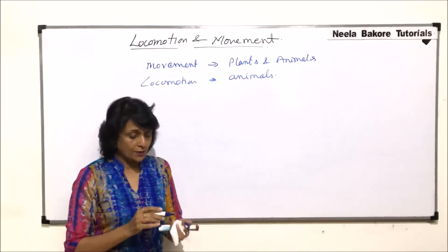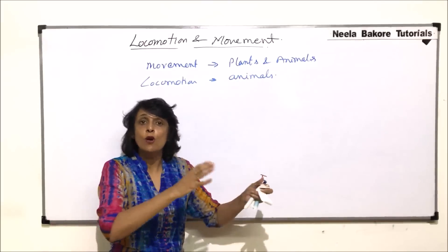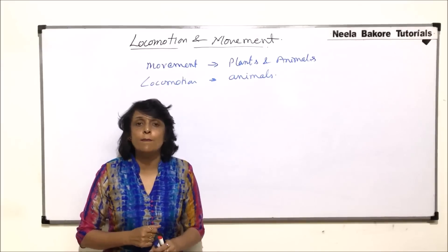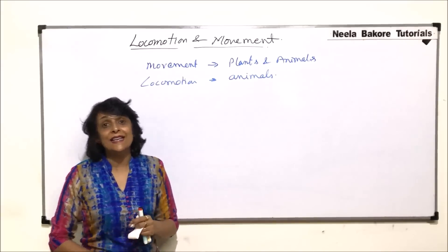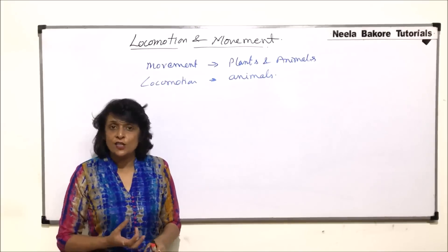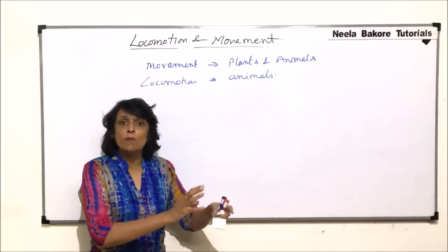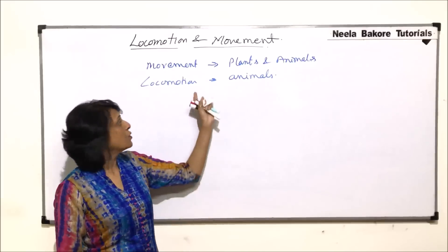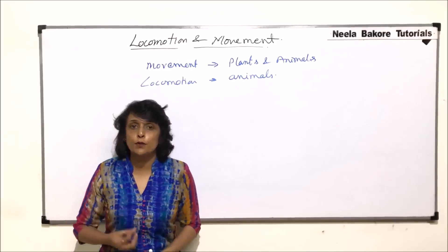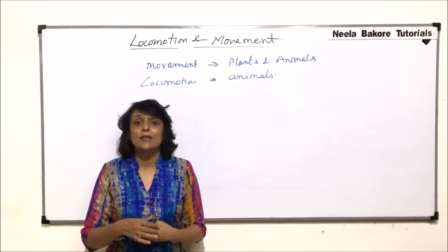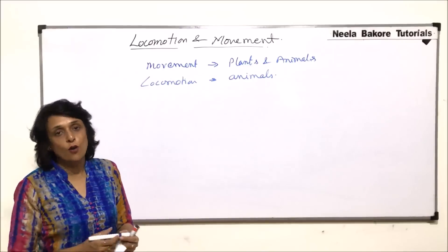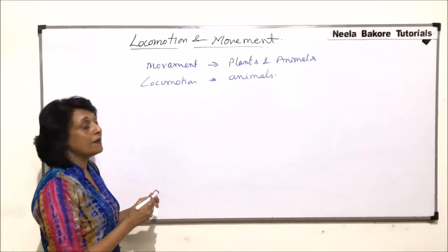Locomotion is a characteristic feature of animals — it is shown by animals only, not by plants. Plants don't move from one place to another. However, some unicellular plants like Chlamydomonas have flagella and are able to swim from one place to another. So most plants do not show locomotion, except for a few unicellular structures which have flagella.